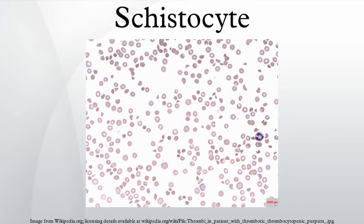There is usually no change in deformability, but their lifespan is lower than that of a normal red blood cell. This is due to their abnormal shape, which can cause them to undergo hemolysis or be removed by macrophages in the spleen.